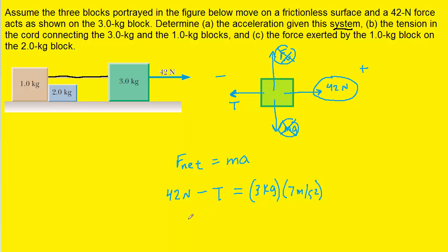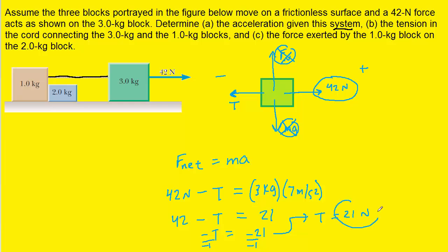Multiplying out the right-hand side gives us 21. Subtracting 42 from both sides gives negative T equals negative 21. Dividing both sides by negative one, we find that the tension T equals 21 Newtons. This is the correct answer to Part B.